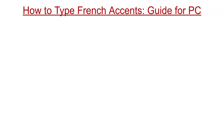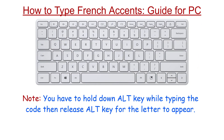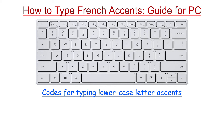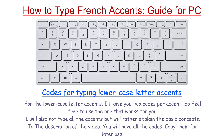How to type French accents — guide for PC. You have to hold down the ALT key while typing the code, then release the ALT key for the letter to appear. For lowercase letter accents, I will give you two codes per accent, so feel free to use the one that works for you. I will also not type all the accents, but will rather explain the basic concepts. In the description of the video, you will have all the codes — copy them for later use.